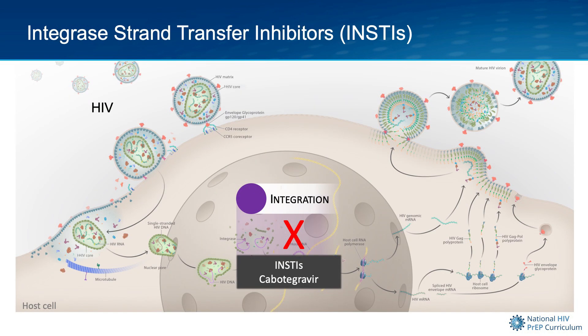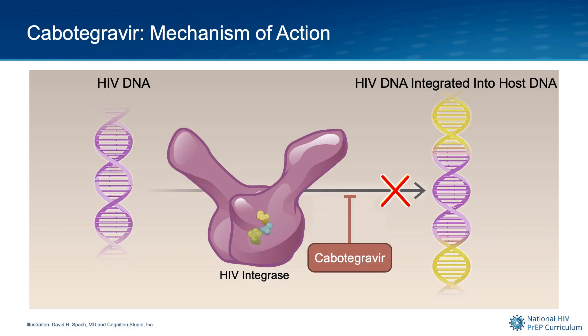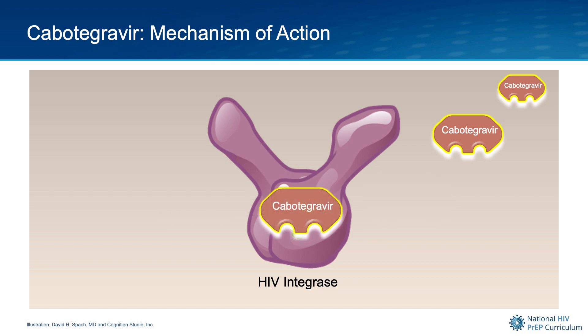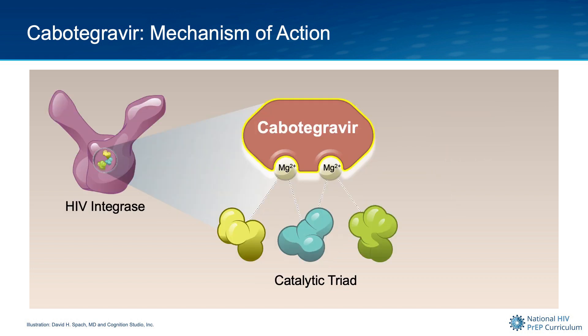Now let's look at cabotegravir and see how it blocks the integration process. The basic concept is that cabotegravir inhibits the integration of HIV DNA into the human DNA. Cabotegravir binds to the key catalytic core region of the HIV integrase enzyme — more precisely, cabotegravir binds to the magnesium enzyme cofactors that are complexed with the catalytic triad.